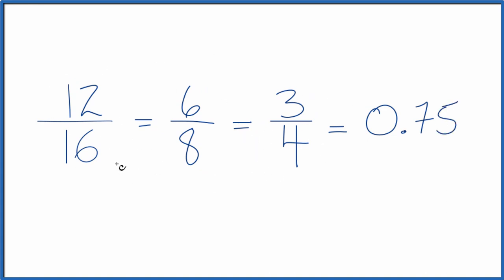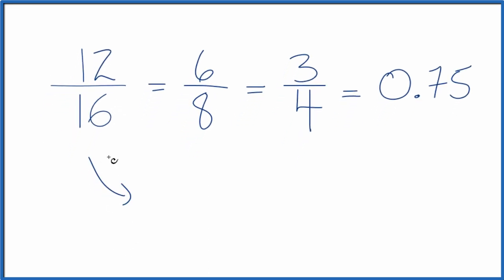Instead of dividing, let's do one where we multiply. Let's multiply the numerator by 2 and the denominator by 2. So 12 times 2 is 24, and 16 times 2, that's 32.